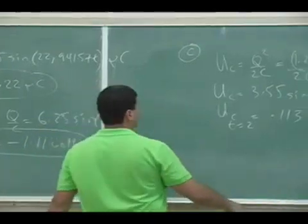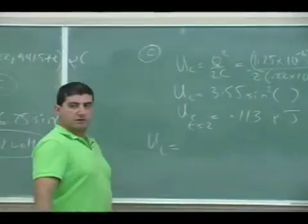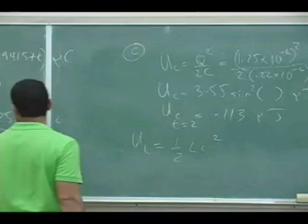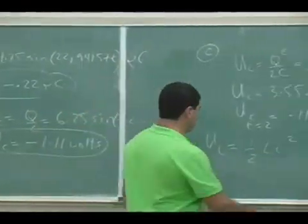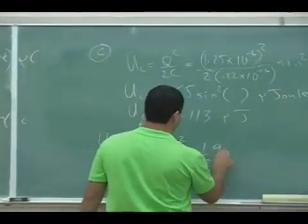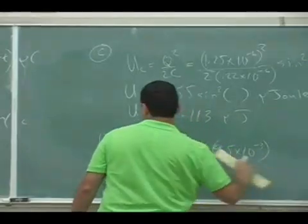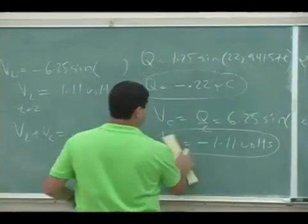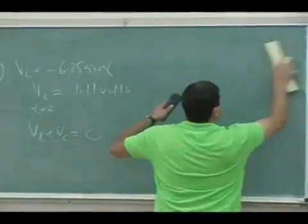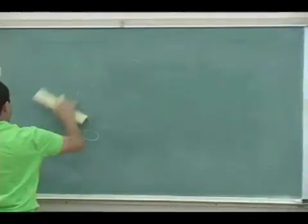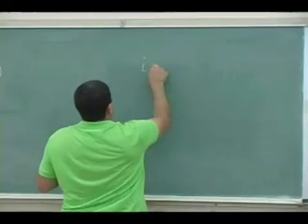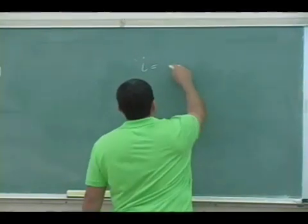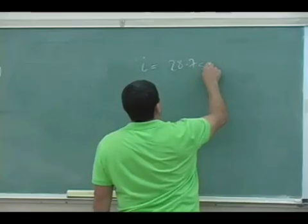Then the energy of the inductor half L I squared. So you get the current function that we had, you square that. So now L was 9.5 times 10 to the minus 3. And what was the current? I have it somewhere here. I think I erased it. Let me just rewrite it here. What was the general current function?